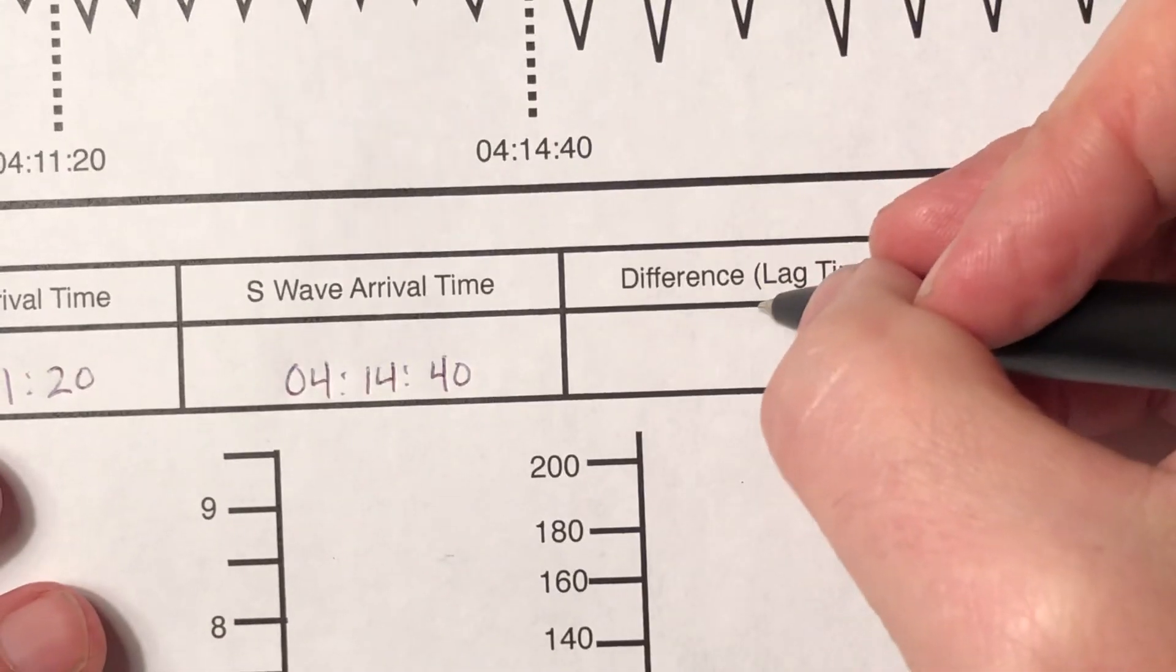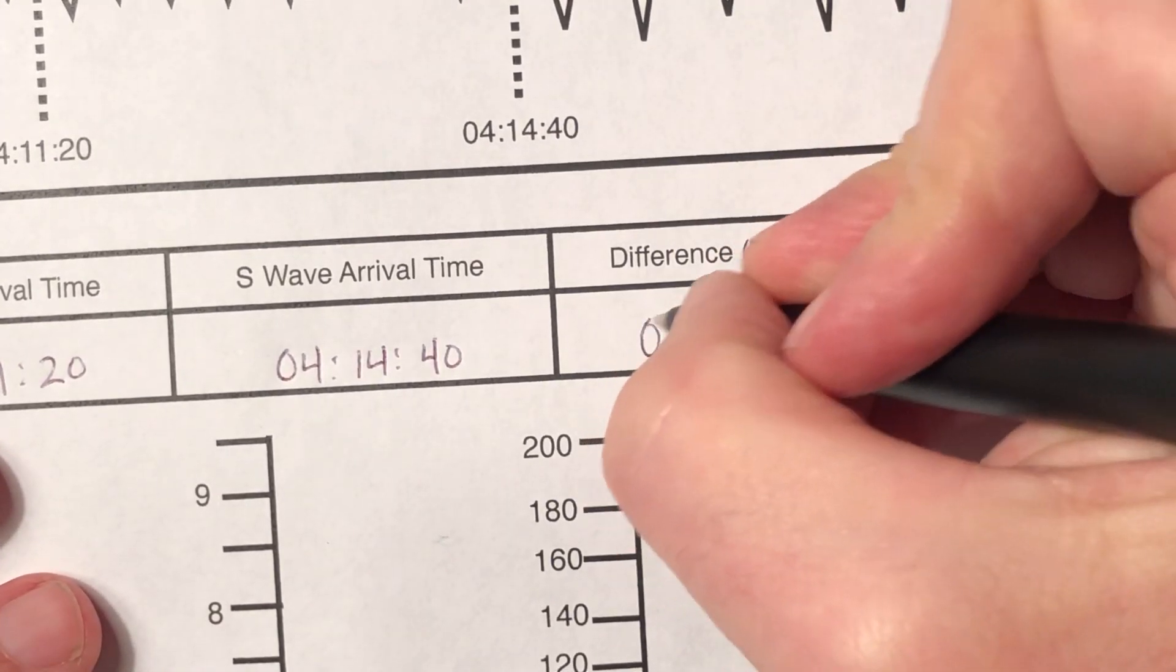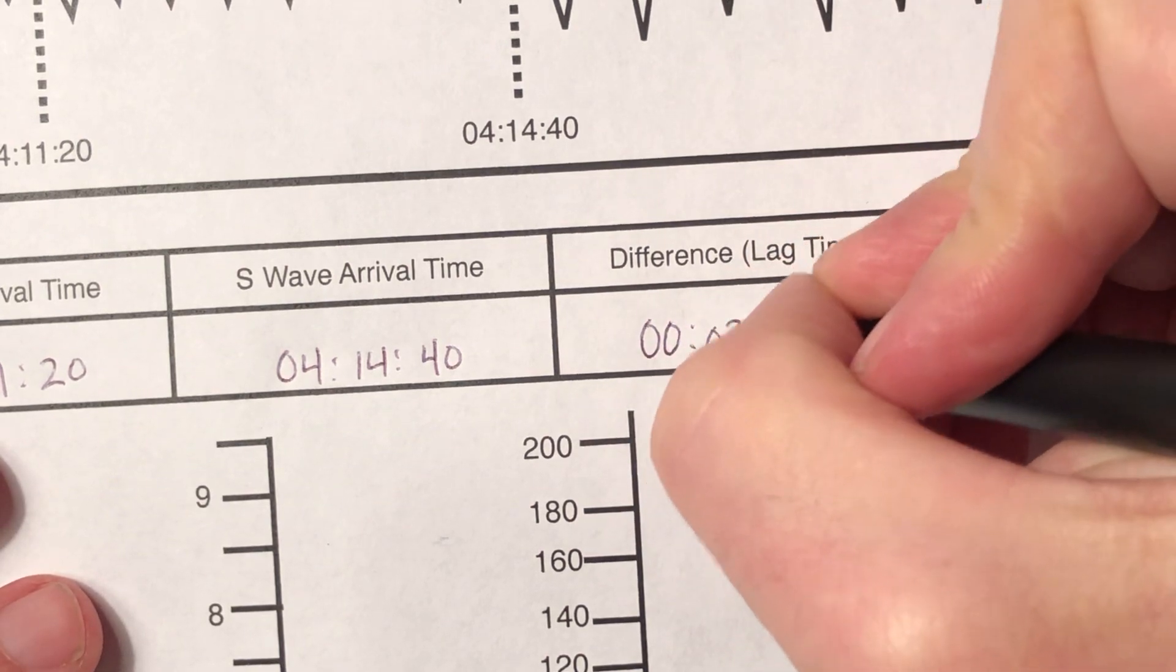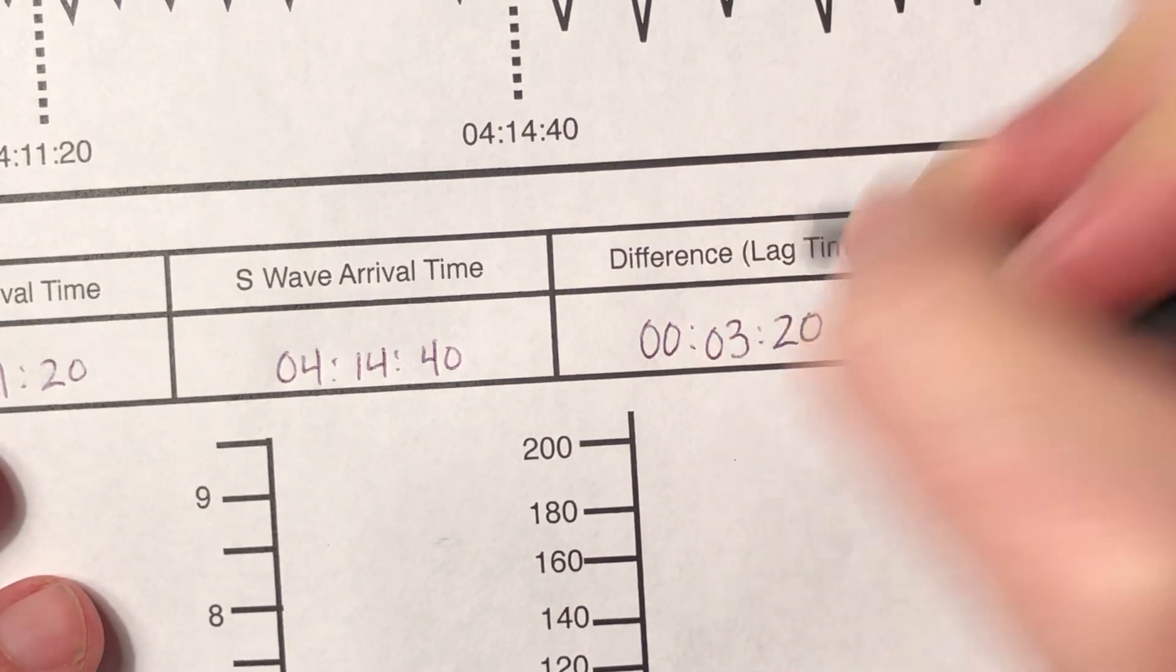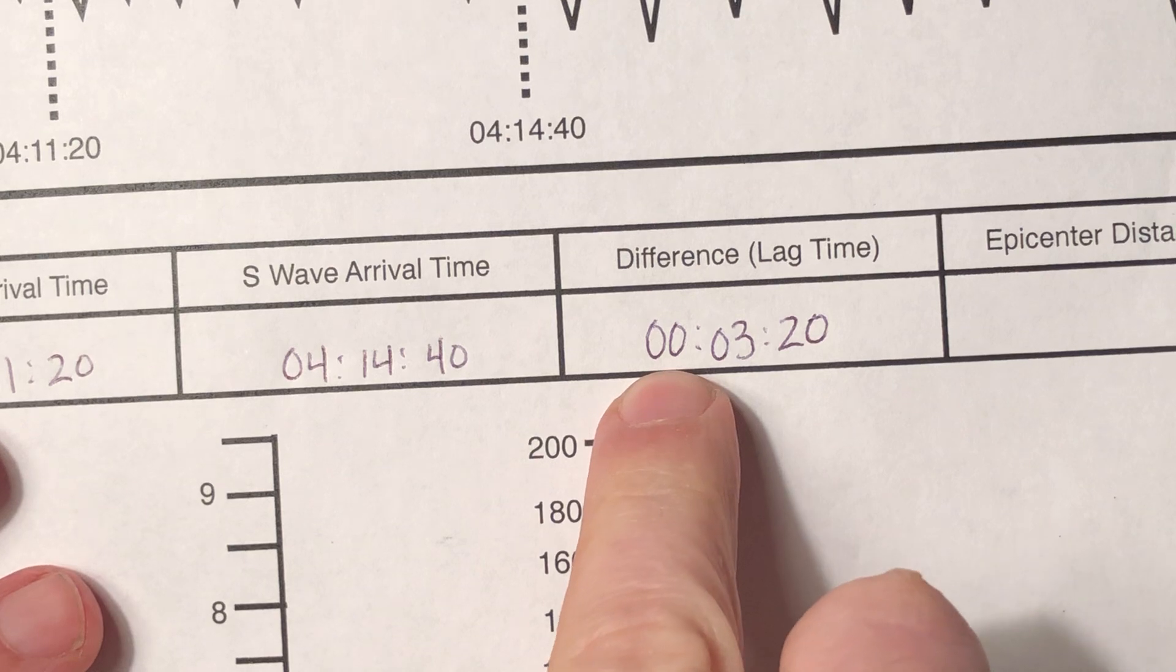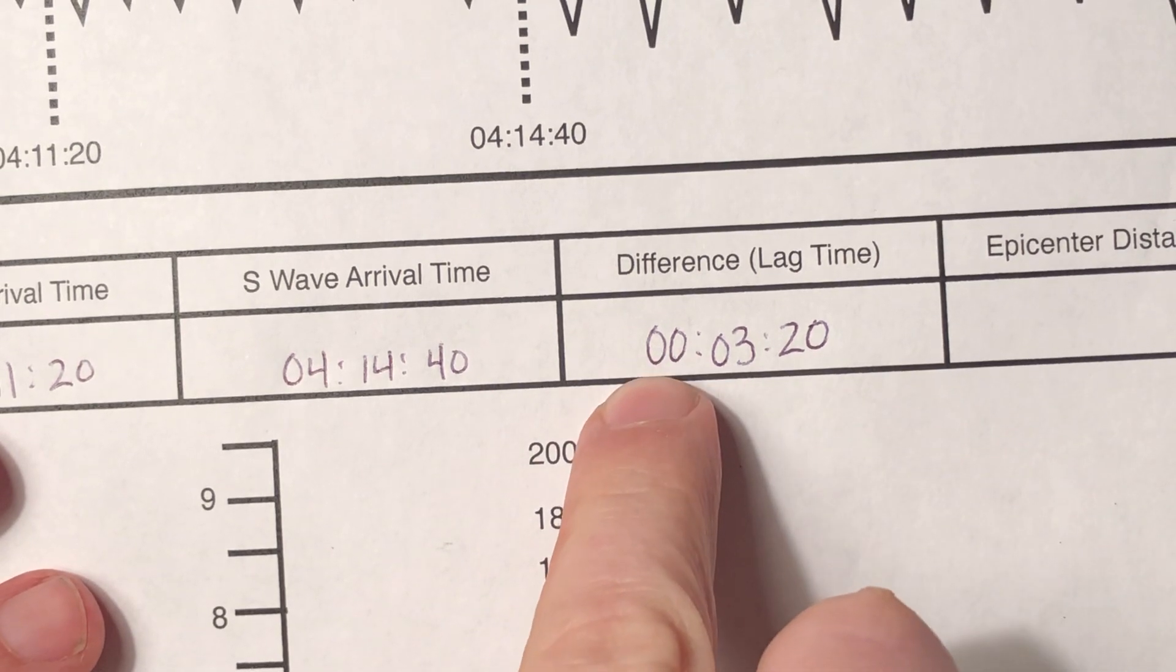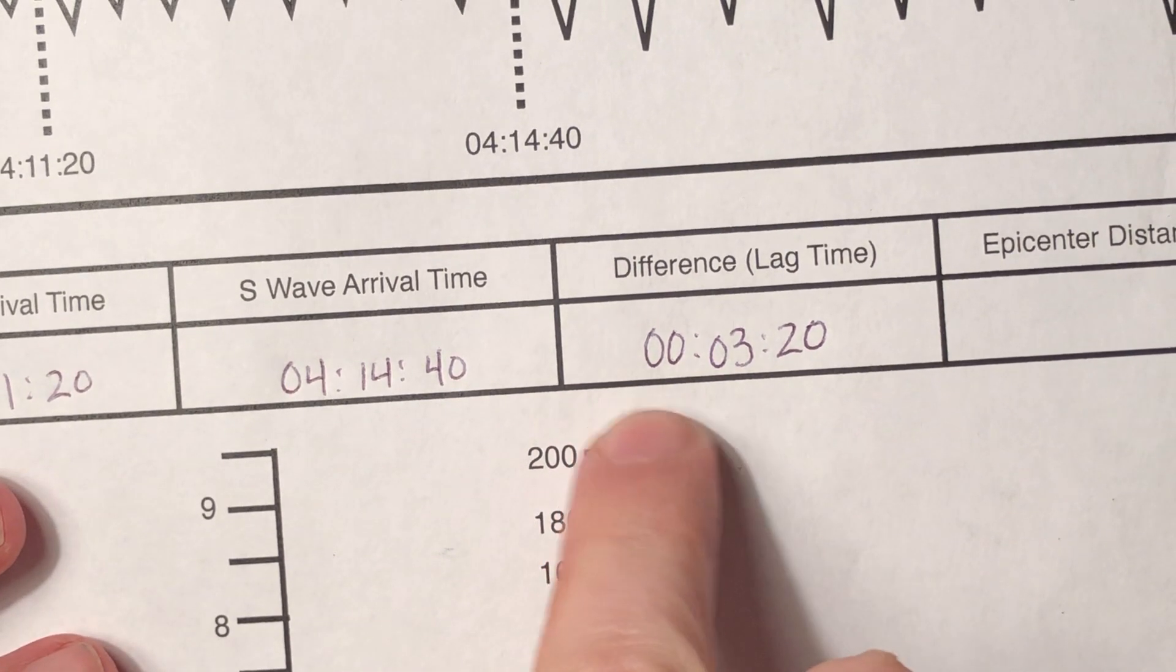That's my difference in arrival time, or what we call lag time. So 0, 0, 3. Notice how I always include a 0 as a placeholder for the hour. If you haven't looked at my video on how to subtract time, please check that out.